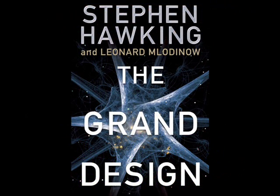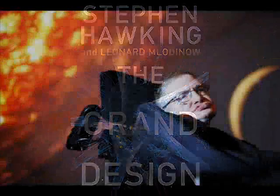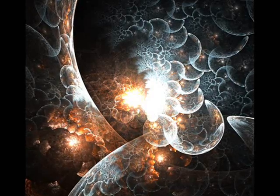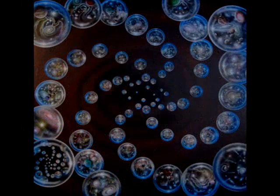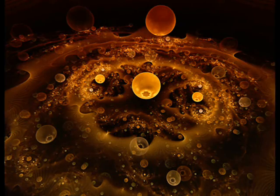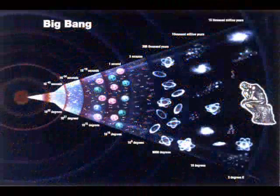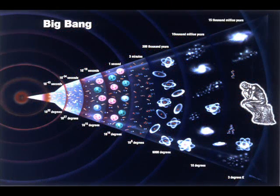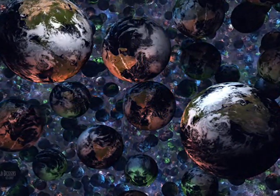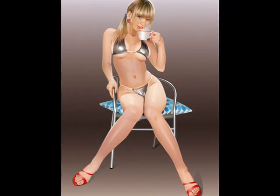In The Grand Design, Stephen Hawking states, M-theory has solutions that allow for many different internal spaces, perhaps as many as 10 to the 500th, which means 10 to the 500th different universes, each with its own laws. To get an idea how many that is, think about this: if some being could analyze the laws predicted for each of those universes in just one millisecond and started working on it at the Big Bang, at present that being would have studied 10 to the 20th of them. And that's without coffee breaks.